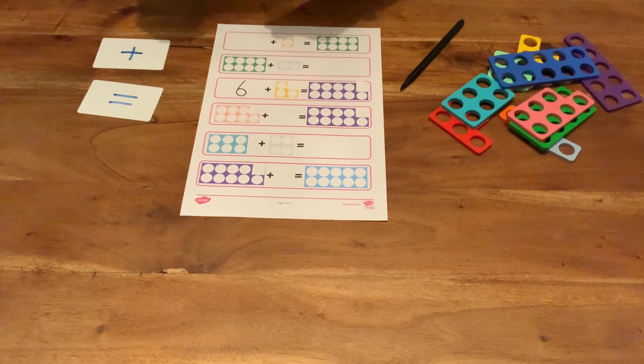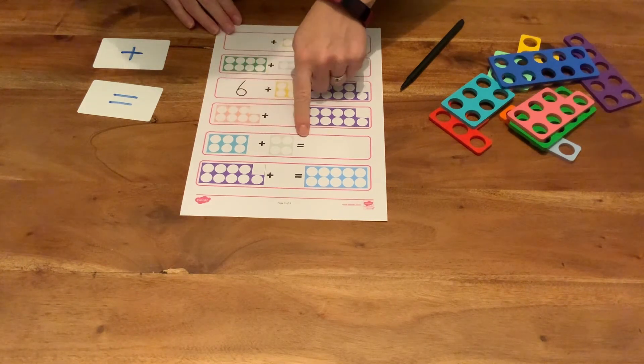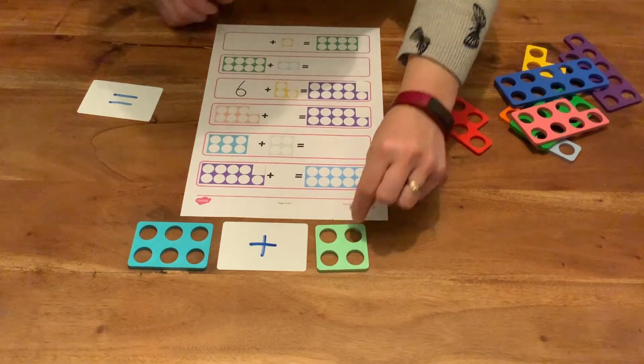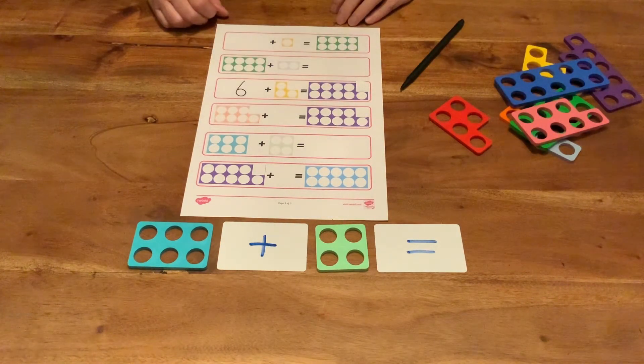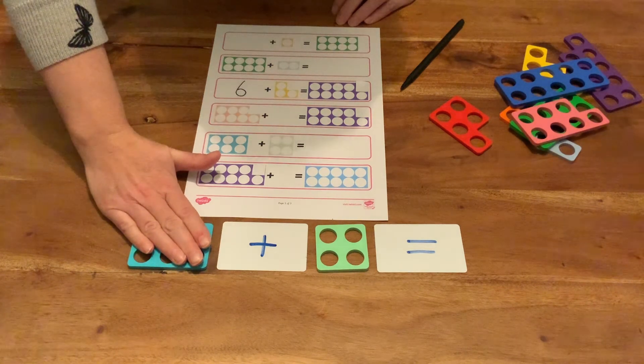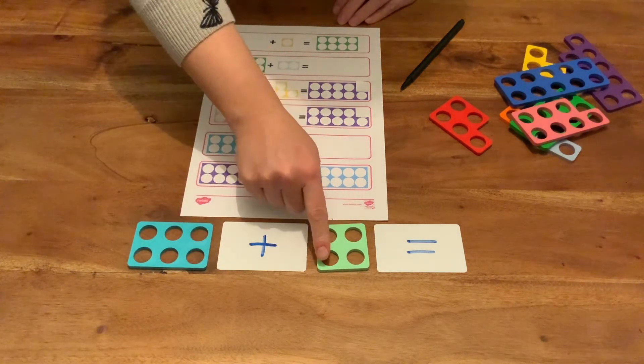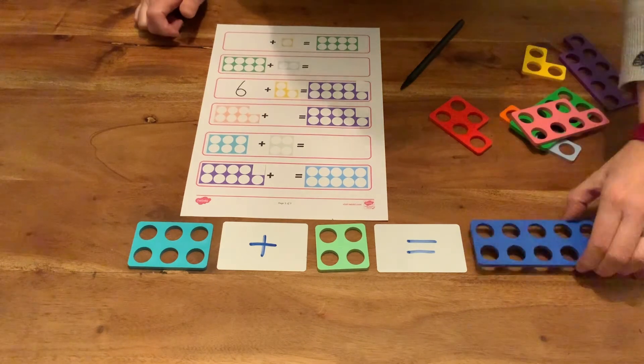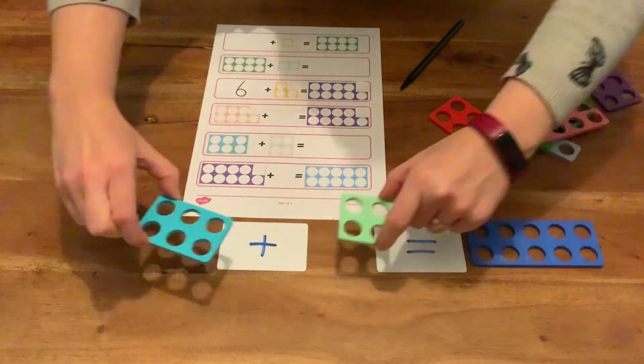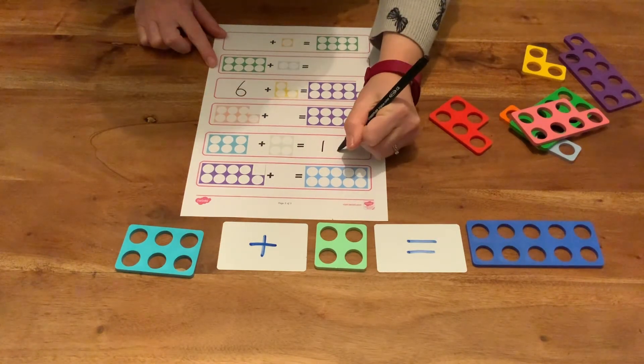Children might need to add up the first two number shapes. Six add four equals. They can make the number sentence with the practical objects. Now you can encourage children to count on from the first number shape. Six seven eight nine ten. Now let's find the ten piece. Put the six and four on top of the ten piece to check your answer. Six add four equals ten.